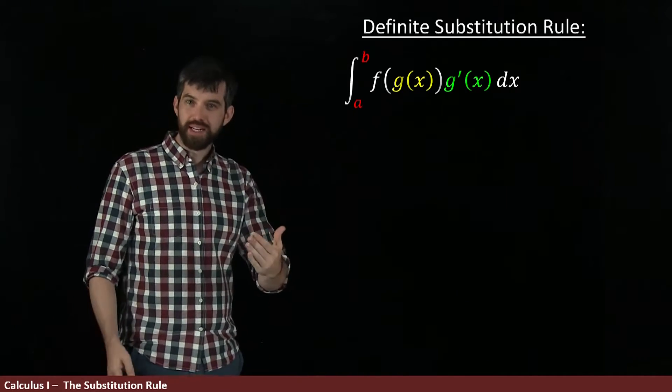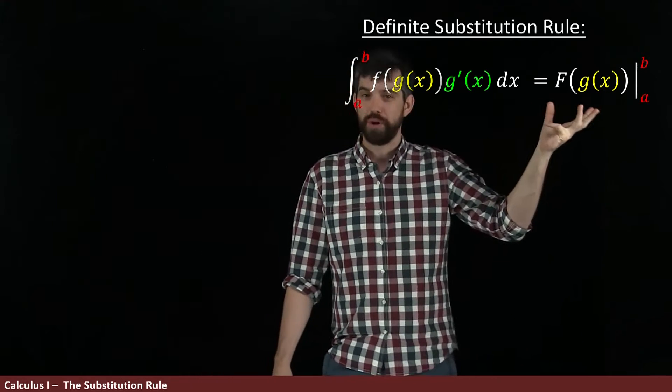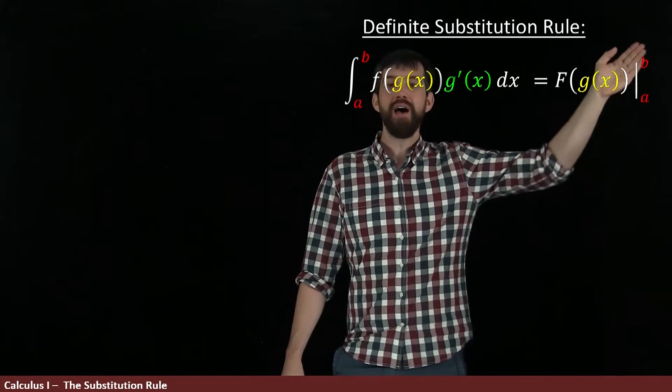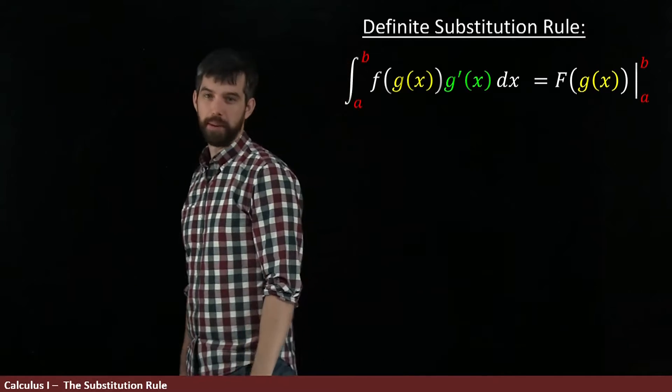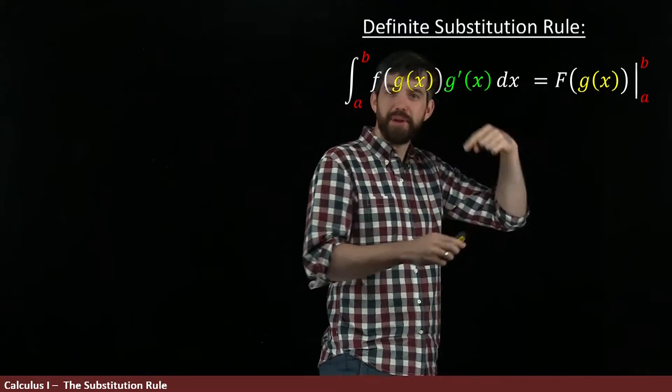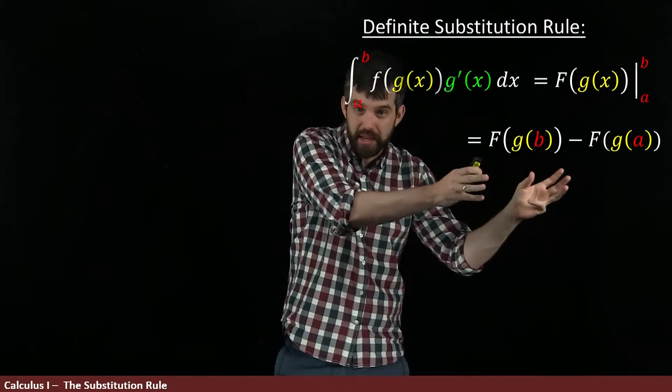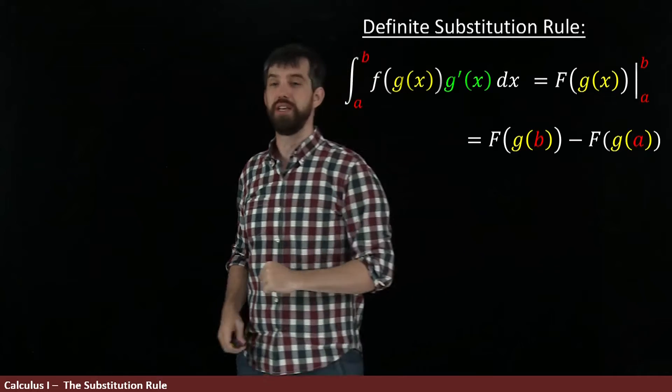Well, first of all, it's the same basic idea that we had before: the antiderivative of f, the capital F, at g, but evaluated between a and b. And these bars mean I'm going to plug in b and I'm going to subtract off plugging in a. So in other words, this just looks like F of g of b minus F of g of a.